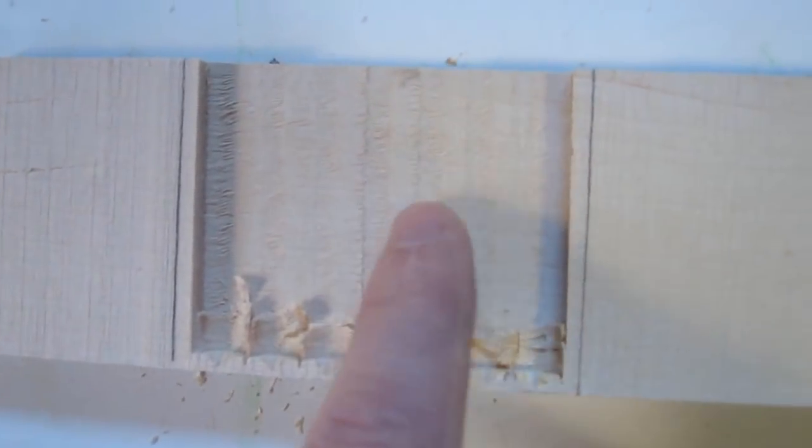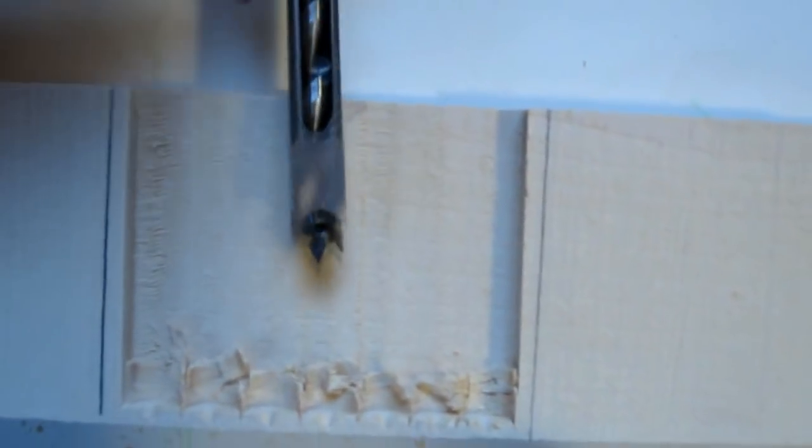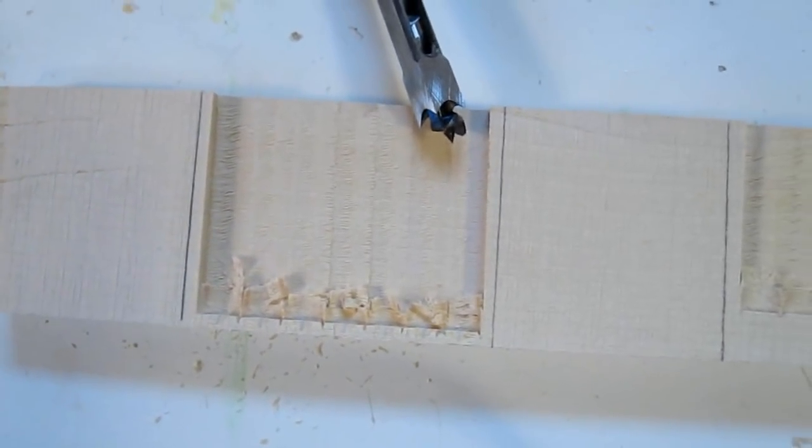And the sides are not very clean either. It's because the chisel is just essentially pushed straight down and that makes the cut. So it's really not a very elegant way of making mortises.